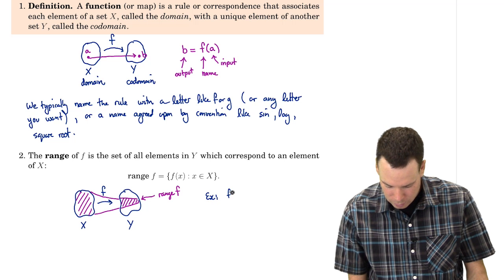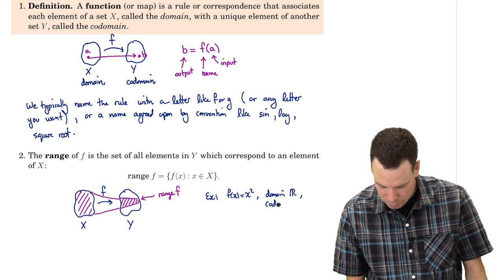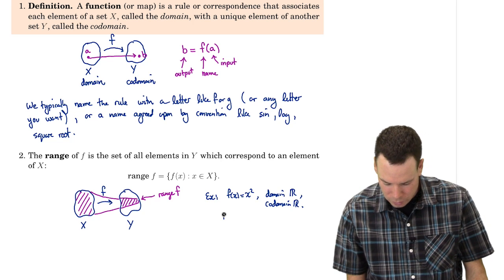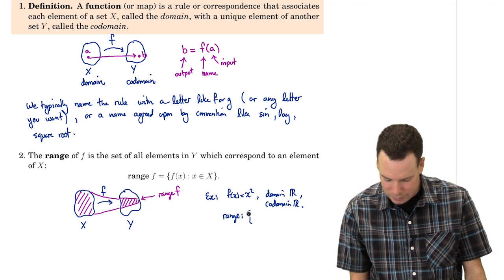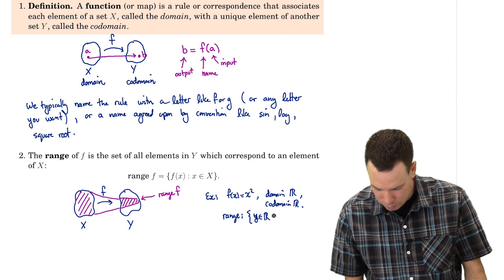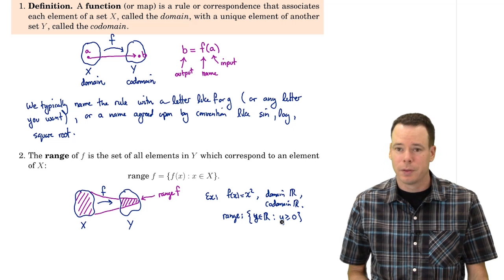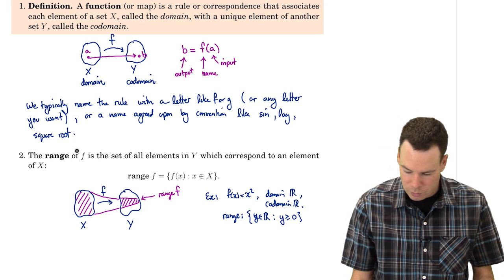As an example, let's consider the function f(x) = x², where the domain is ℝ and the co-domain is ℝ. What's our range? Well, the range is the set of all things that come out of this function, which is just the non-negative real numbers: the set of all y in ℝ such that y ≥ 0. So the range is not the full co-domain — it's a smaller subset.